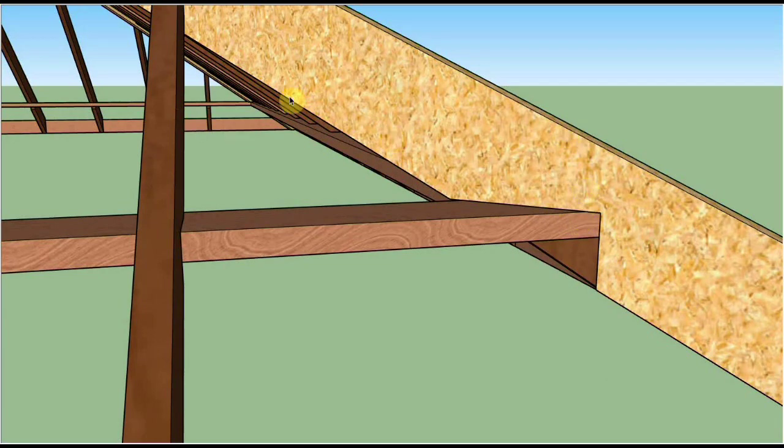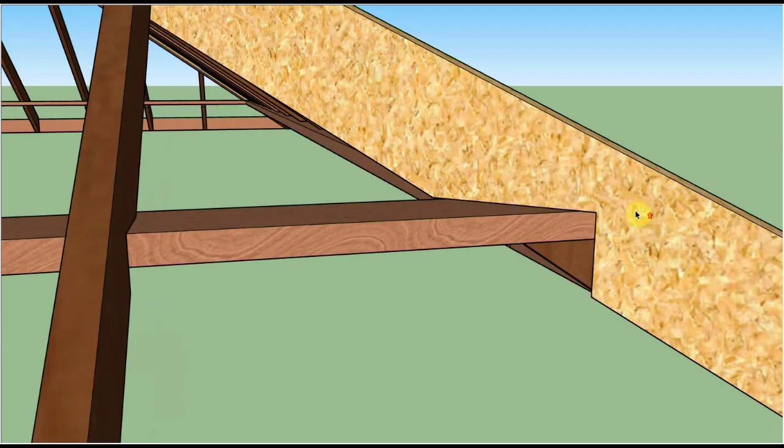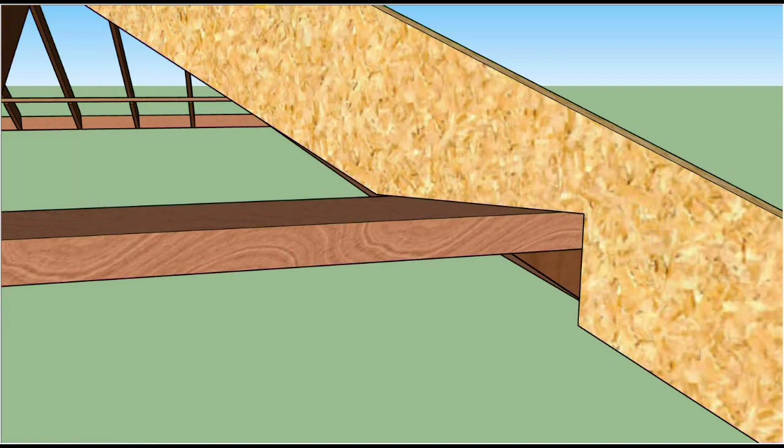If you measure the stand at the same spot now, right where the plumb cut is, the stand is now 3 and 9/16 of an inch. It's 3/8 of an inch less than the stand of the common rafter. If you measured the stand right where it's over the plate though, it will be the same as the common rafters—3 and 15/16 at this point, so that means it's the same height at that point as all the common rafters.